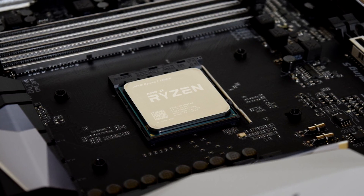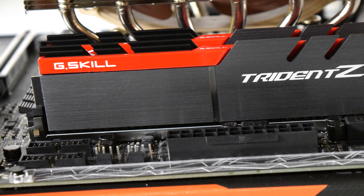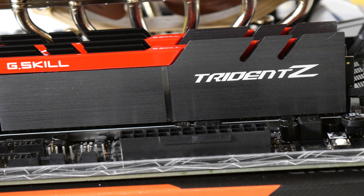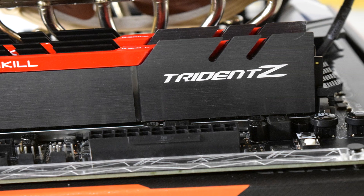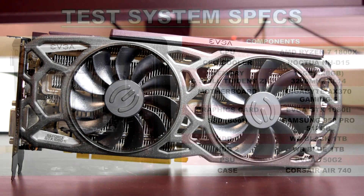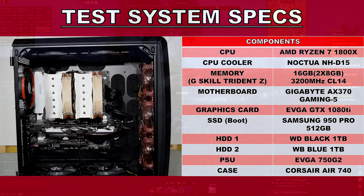To quickly go over some system specs, my PC consists of an AMD Ryzen 7 1800X, which has been overclocked to 3.9GHz, and I have 16GB of G.Skill Trident Z memory which I have overclocked to 3,333MHz. For the graphics card, we have an EVGA GeForce GTX 1080 Ti SE Black Edition. For full system specifications, you guys can check that out in the video description down below.